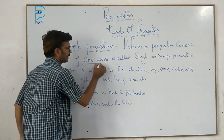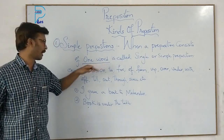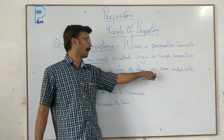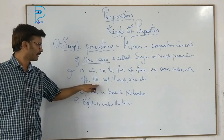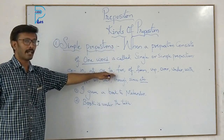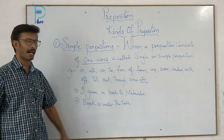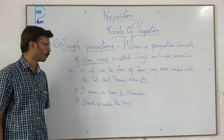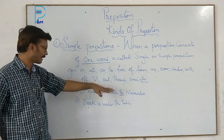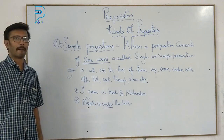Simple preposition: when a preposition consists of one single word, it is called a single or simple preposition. For example: in, at, on, to, for, of, from, up, over, under, with, till, out, through, since, etc. These are all single-word prepositions. For example, 'I gave a book to my friend' or 'The book is under the table.'